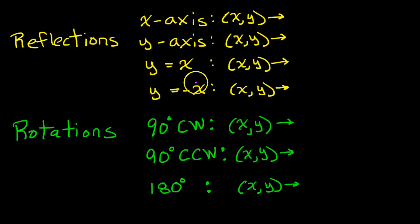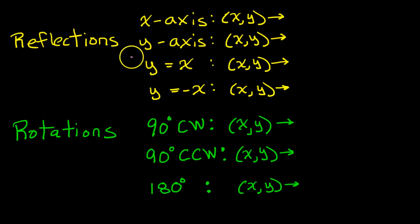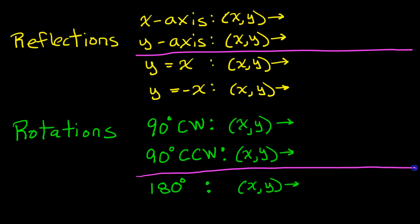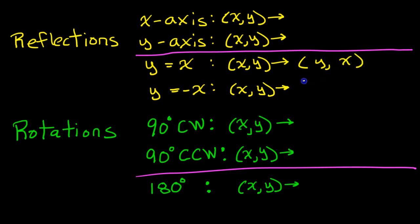The ones in yellow are the reflections, and the ones in green are the rotations. In addition to this color coding, I like to draw a line right here and right here. Everything between these two lines, the x and y reverse. So it will help you memorize the list if you write everything in this order and mark off the lines. So x, y is going to become some type of y and x — everything in between the lines will be y, x.